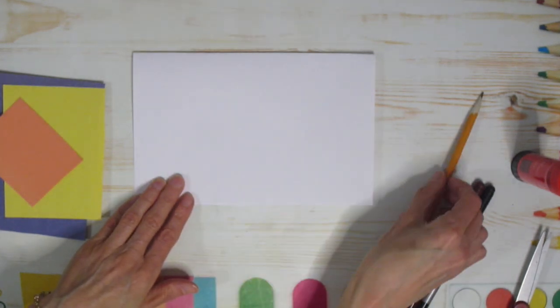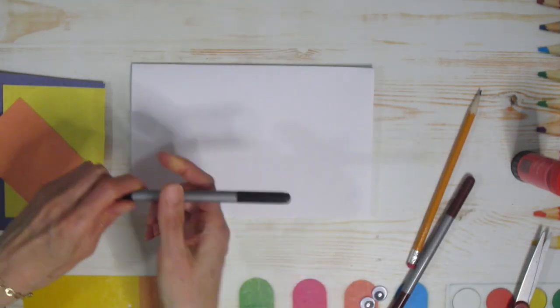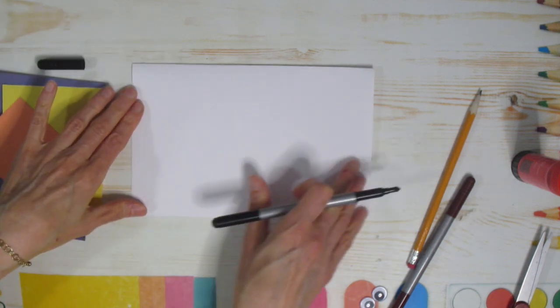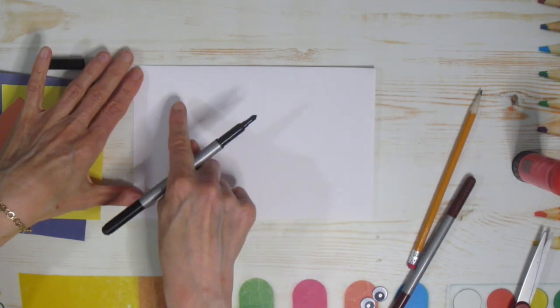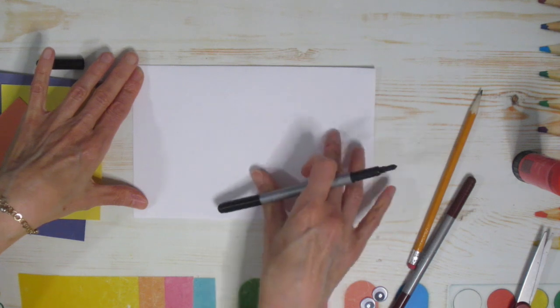Now, you might want to use a pencil first so that if you're making mistakes you can correct it. I'm going to use a marker just so that you can see better. I'm going to do mine in black but you could do yours in whatever color and multiple colors when you're done. It's up to you. I'm going to write, you're a hoot dad, right, because we're doing an owl.